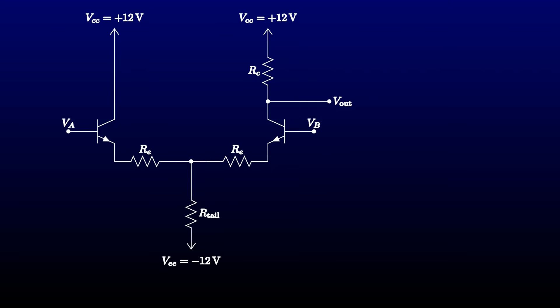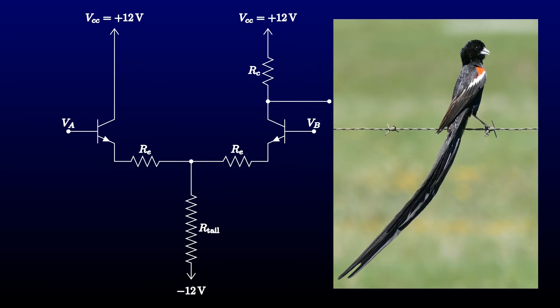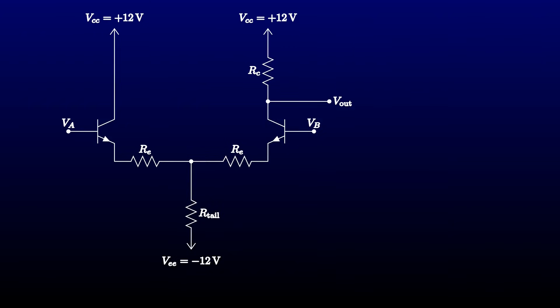This configuration is called a long-tailed pair. Back in the day, if resistors were very different in value, it was usual in schematics to show the larger ones with more zigzags. Apparently, the long resistor hanging off the bottom reminded somebody of a widow bird on its perch, dangling its ridiculously long tail below it. As with all our transistor circuits, we'll start by choosing a quiescent point. I'm going to assume that at the quiescent point, both inputs are grounded. That will place both emitters a diode drop below ground.